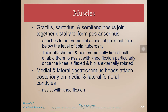Gracilis, sartorius, and semitendinosus join together distally to form the pes anserinus — meaning 'goose foot' — because it looks like a goose foot on the anterior surface of the tibia, just below the tibial tuberosity. We also have the medial and lateral gastrocnemius heads attaching posteriorly on the medial and lateral heads of the femoral condyles, so they do cross the knee on the posterior aspect. We won't talk about those muscles in this video; we'll cover them when we talk about the lower leg.